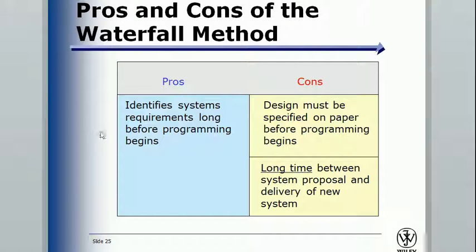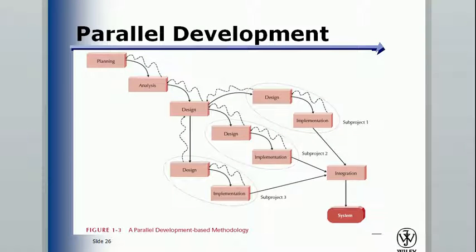Waterfall development is like a waterfall — you start from planning, fall into analysis, then design, then implementation, then to the system. These four are also interconnected and can work in reverse. Pros: you identify all system requirements long before programming begins. Cons: design must be fully specified on paper before programming starts, and there's a long time between system proposal and delivery because you go through all four phases without writing a single line of code.